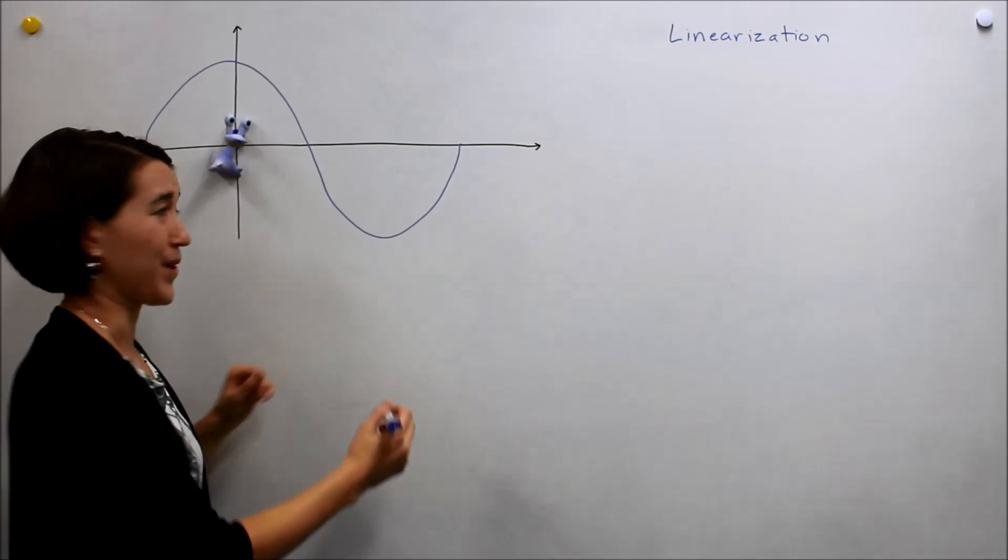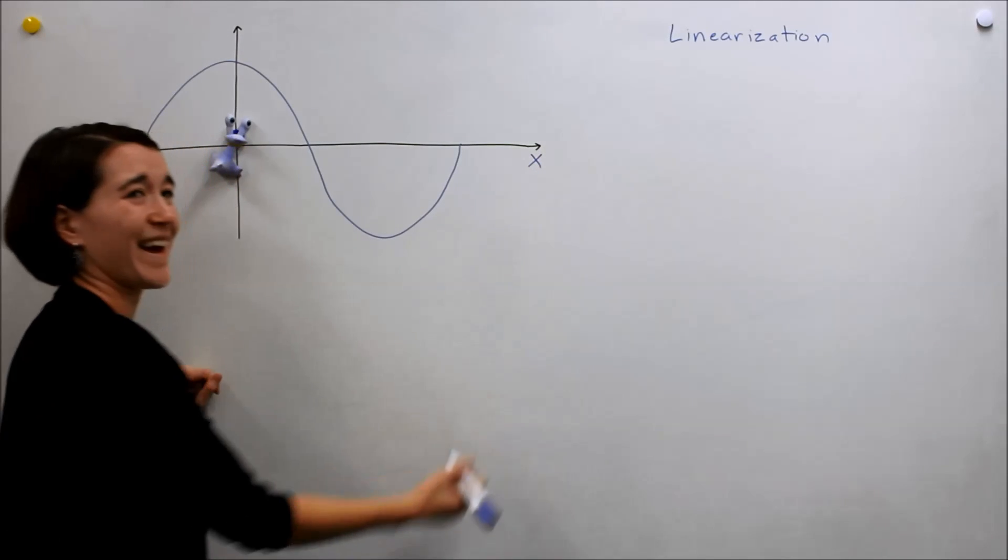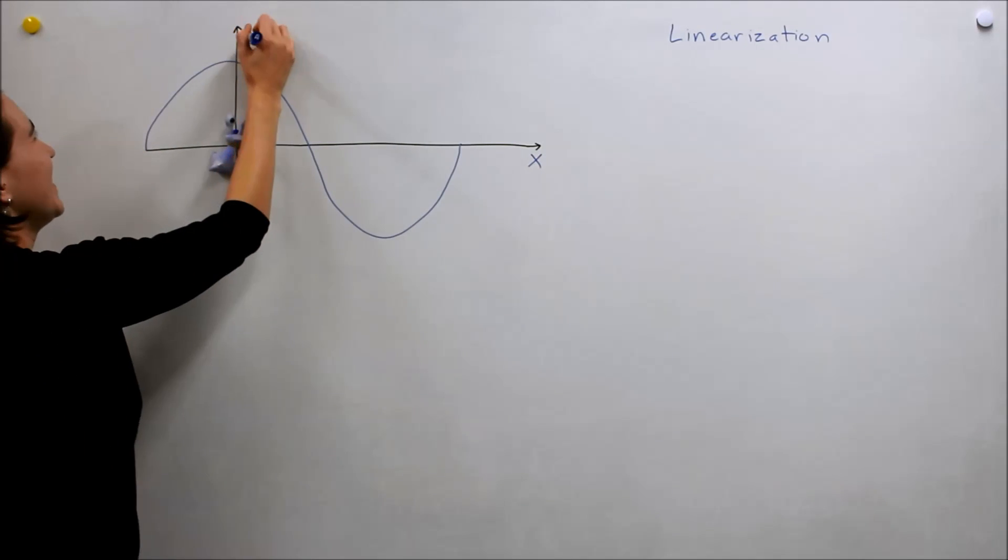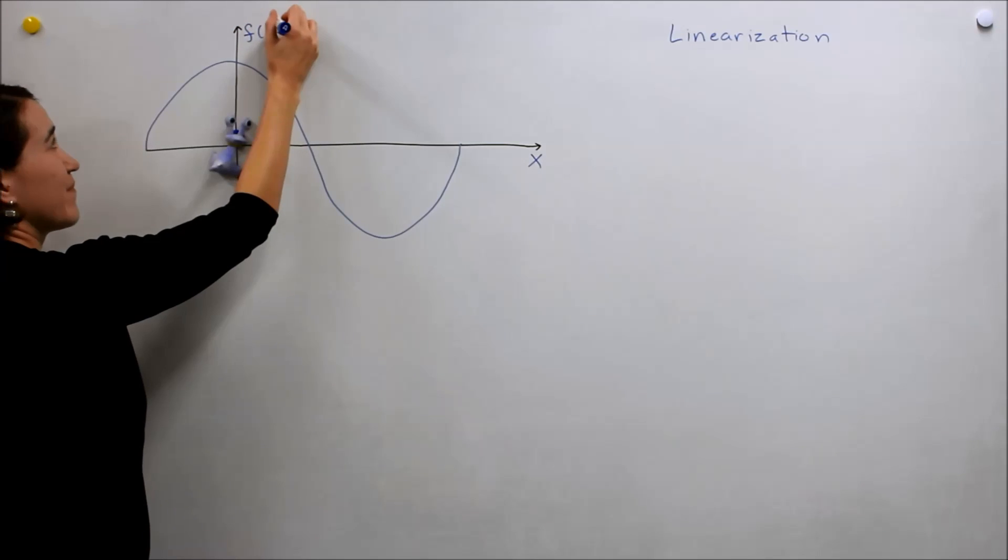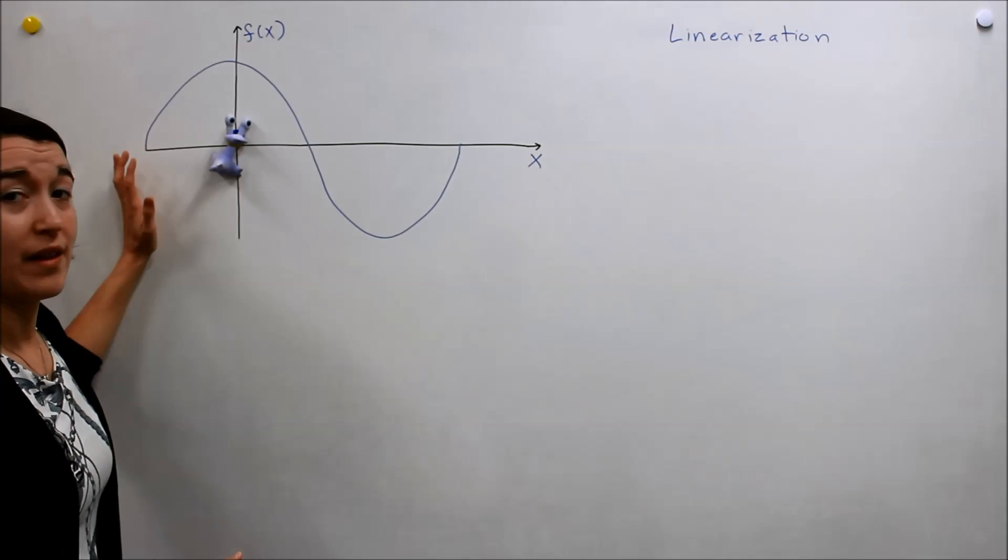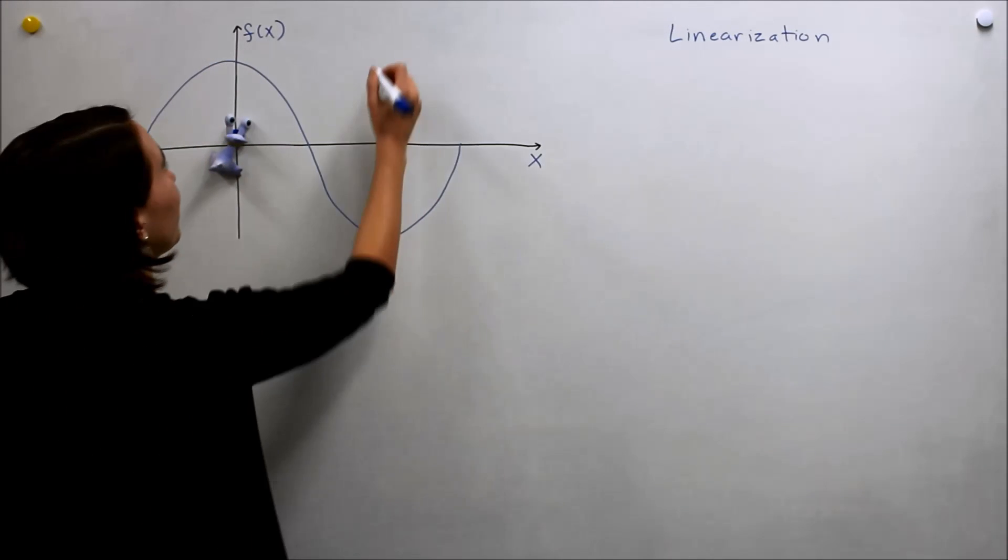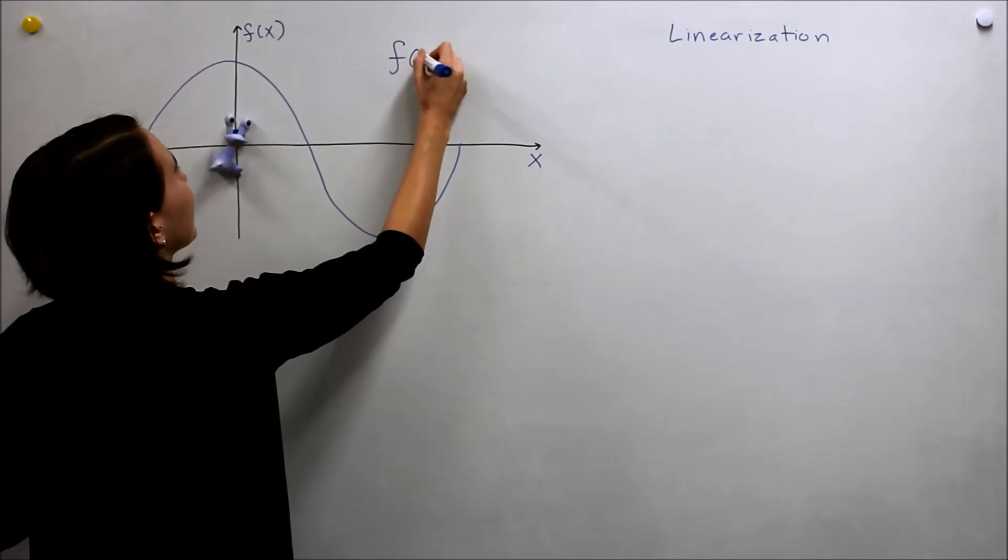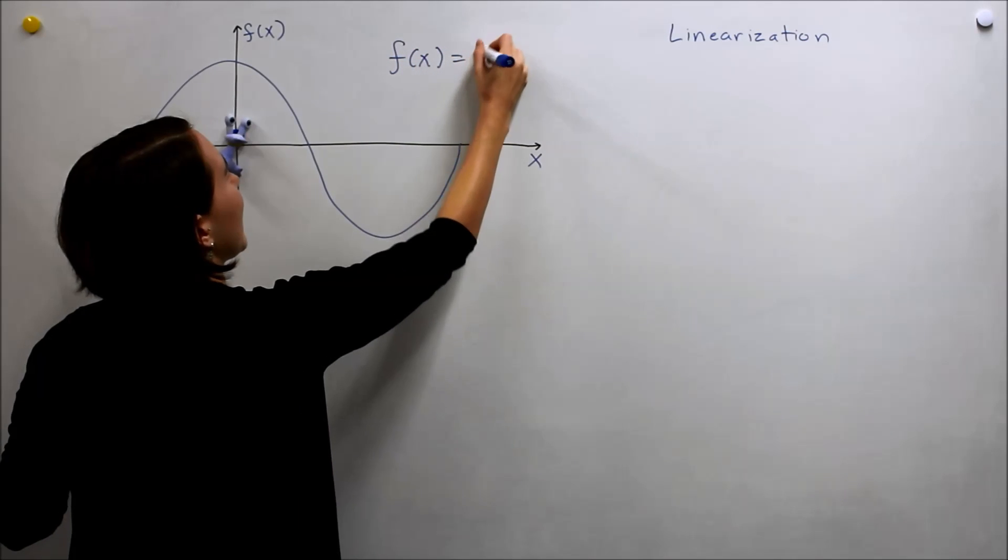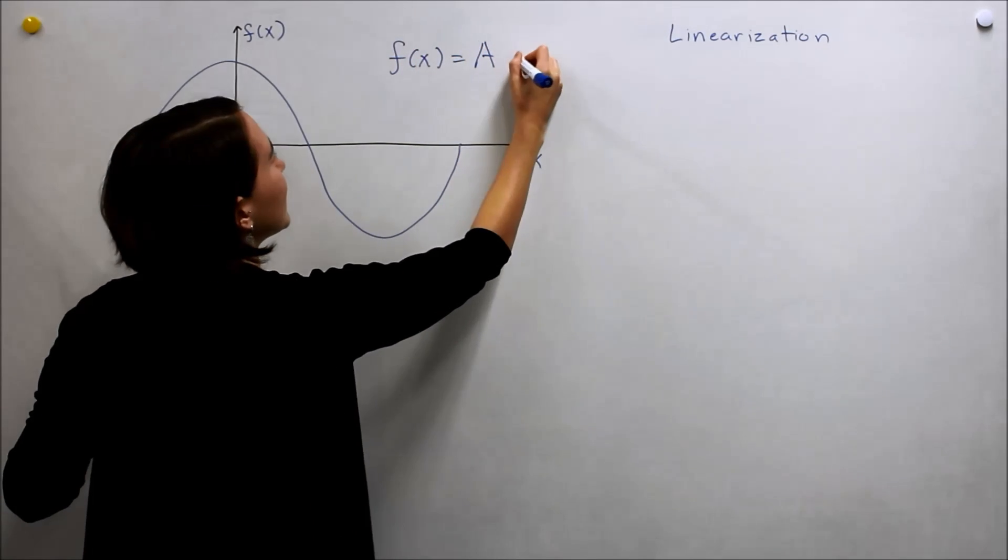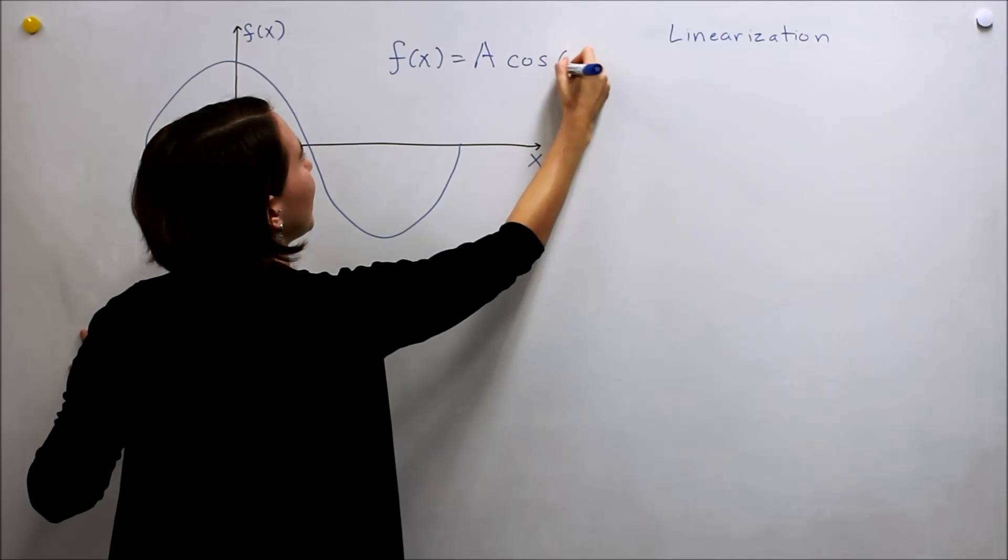Well we can model this, so we'll call this x and we'll call this position f of x. And this driver is really actually quite good. They made a perfect cosine, so we'll model that as f(x) equals A, we'll say some amplitude, cosine of x.